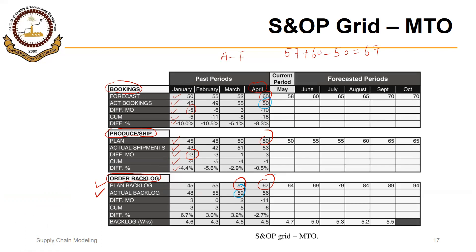The actual backlog is calculated as: actual backlog of the previous month (59) plus actual bookings for this month (50) minus actual shipments for April (53). So 59 plus 50 is something you have to deliver, minus 53 which is what you have delivered — that reduces the backlog. So the actual backlog equals 56. Actual backlog equals actual backlog of previous month plus actual bookings minus actual shipments.